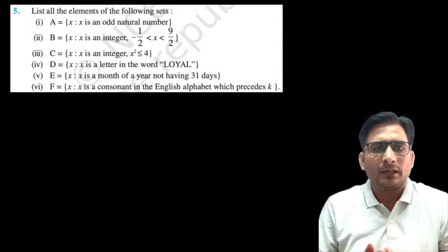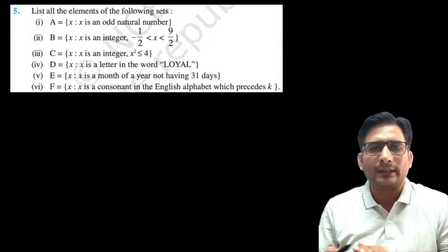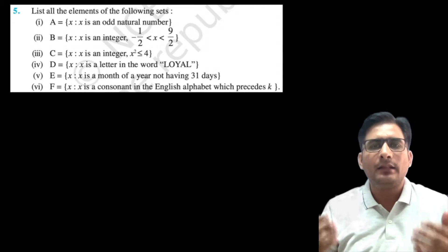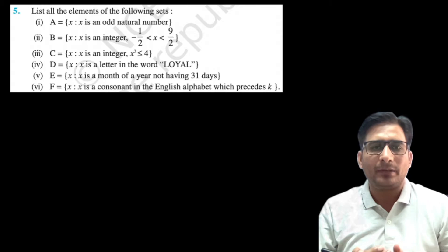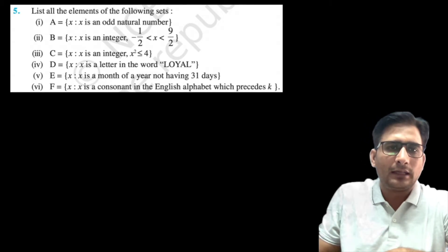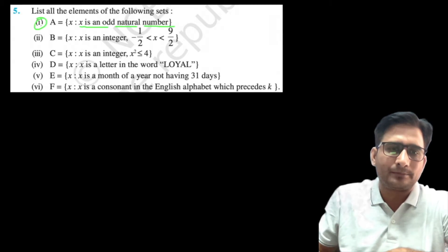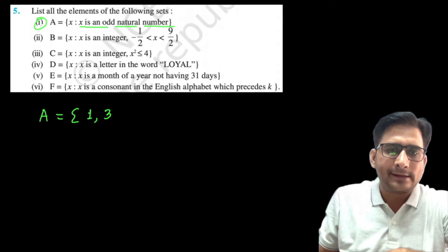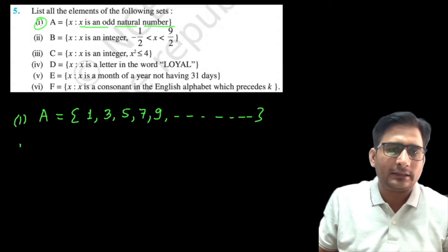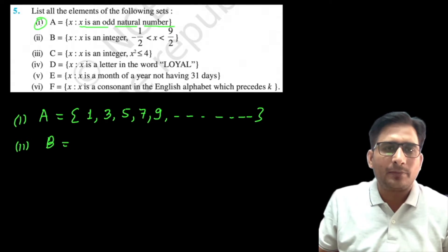Now Question 5: list all the elements of the following sets. This means we need to write them in roster form. Part one: A = {x : x is an odd natural number}. The odd natural numbers are 1, 3, 5, 7, 9, and so on — there are infinitely many elements here.